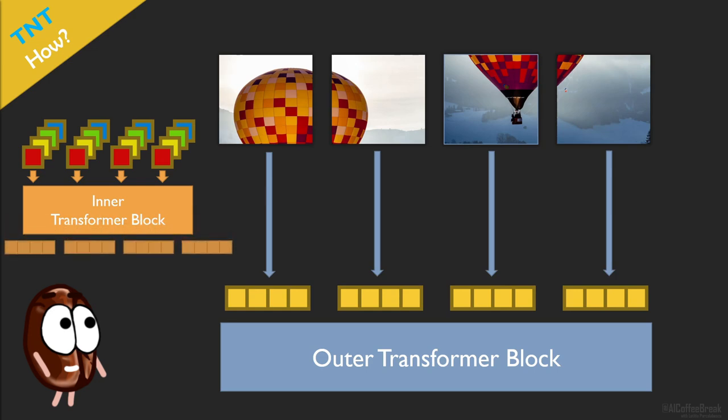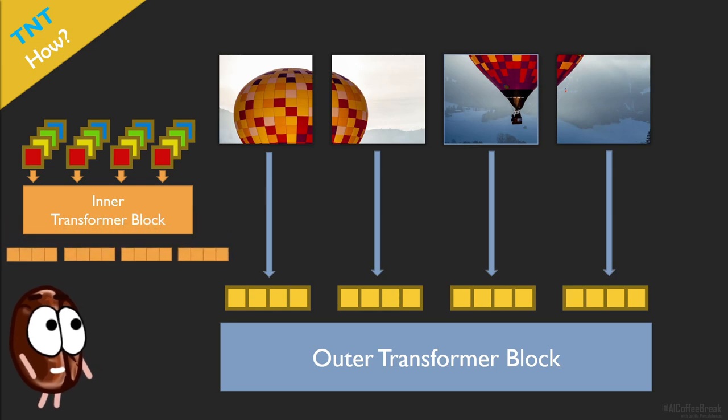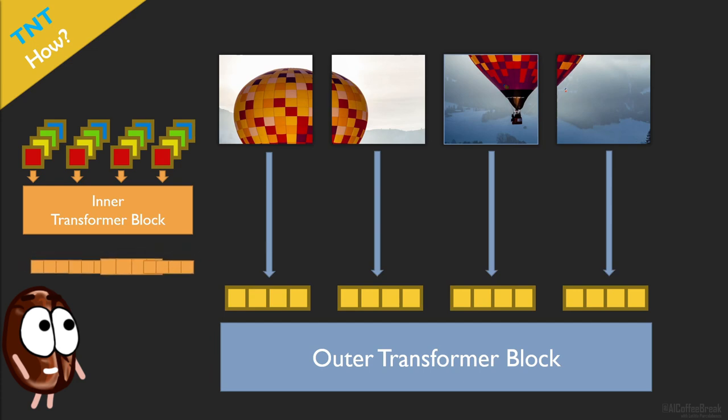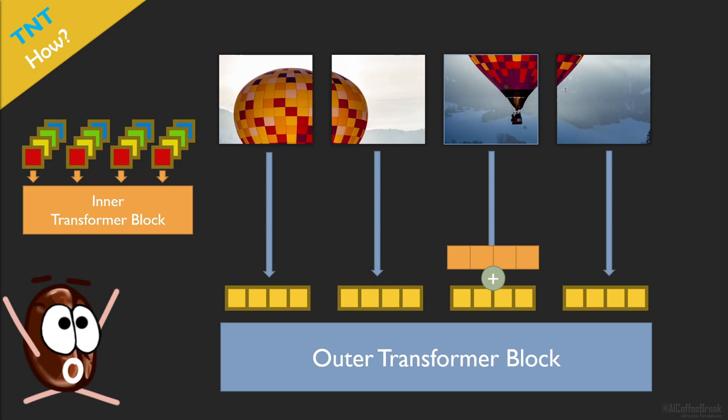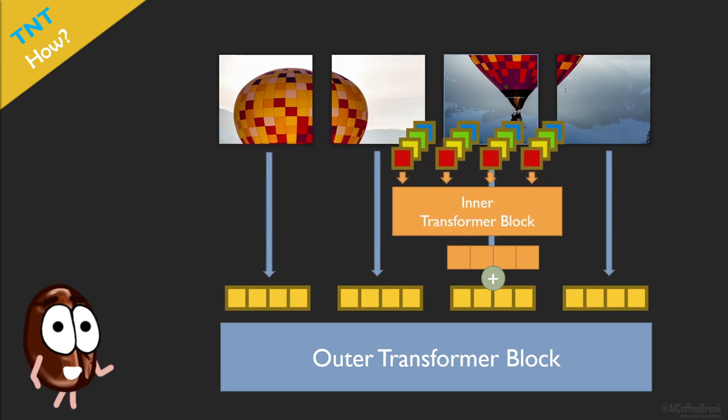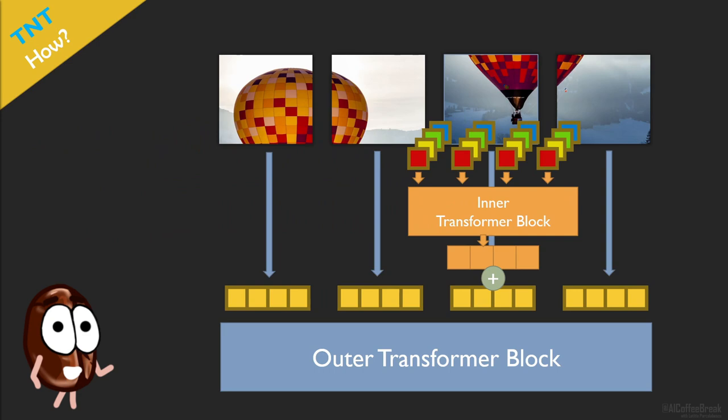And now the inner and outer transformer are combined. What comes out of the inner transformer is concatenated and then linearly projected to fit the dimension of the outer transformer representation, which is then added to the patch embedding before it is processed by the outer transformer. So the outer transformer now works on patch level and on the representations that were computed by the inner transformer on the pixel level.